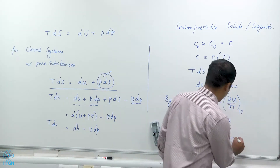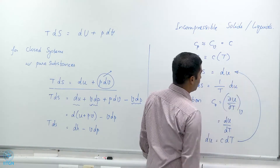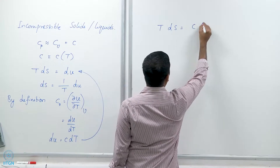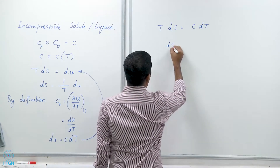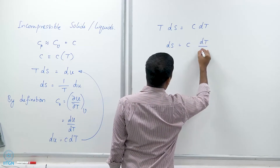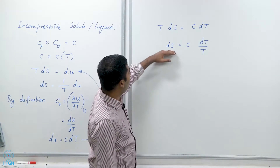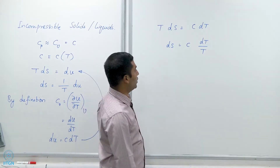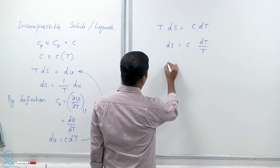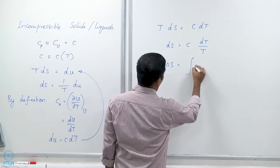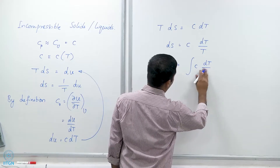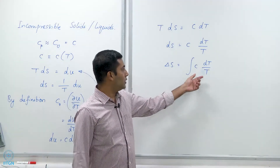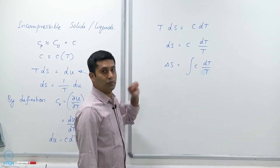Once I substitute du equals c dT into the equation, I can write T ds equals c dT, and rearranging I get ds equals c times dT over T. So now I have the differential change in entropy equal to the specific heat times the differential change in temperature divided by the thermodynamic temperature. To get delta S, I will need to integrate c dT over T to get the change in entropy delta S of the system.